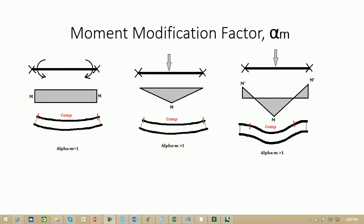Note carefully that the width of the section is constant but the stress developed in the section is varying along its length. This implies that the compression flange is not fully utilized along the entire length — it is more utilized at the center and less utilized as it approaches the ends. This is the reason the member reserves some additional moment carrying capacity against lateral torsional buckling.